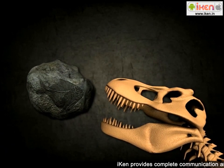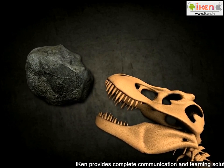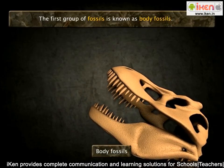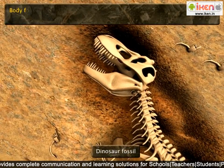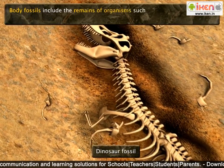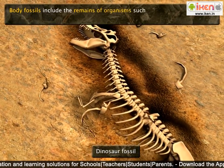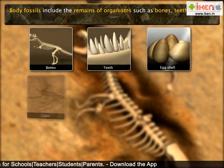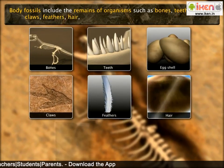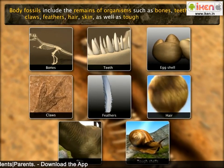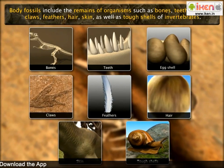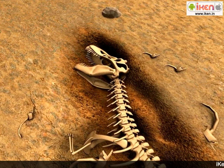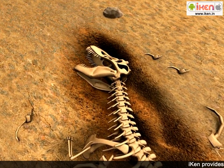Fossils can be divided into two major groups. The first group is known as body fossils. Body fossils include the remains of organisms that were once alive — bones, teeth, eggshells, claws, feathers, hair, skin, as well as tough shells of invertebrates. A body fossil is actual organic material from a creature or plant.